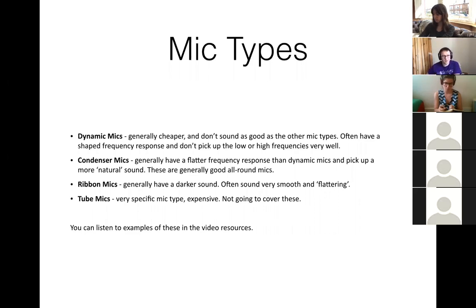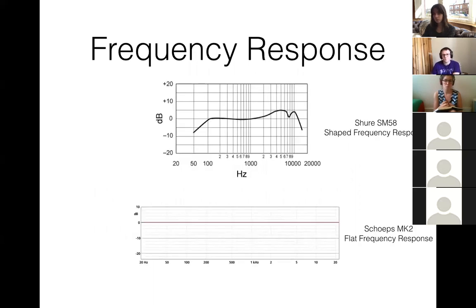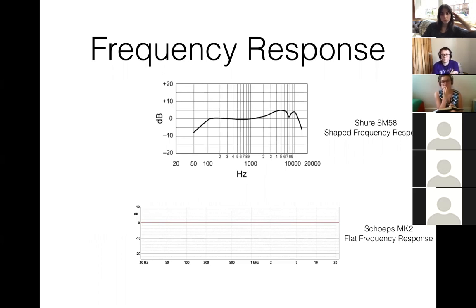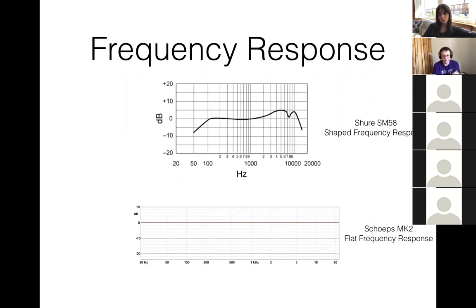I'm talking about microphones first because they're the part of our recording setup that is going to make the biggest difference to the sound, and their placement is going to make the second biggest difference. When thinking about the character of microphones, two technical things influence this. The first is frequency response — there are two types: shaped and flat. A small caveat: there is no such thing as a truly flat frequency response. All microphones have a character; there is no neutral microphone.